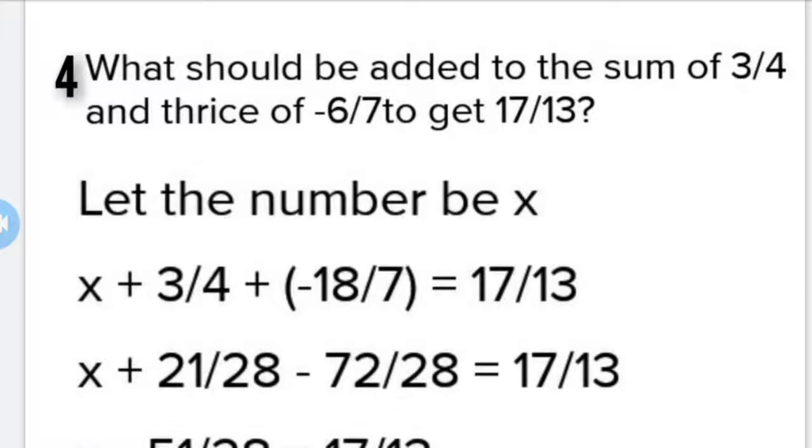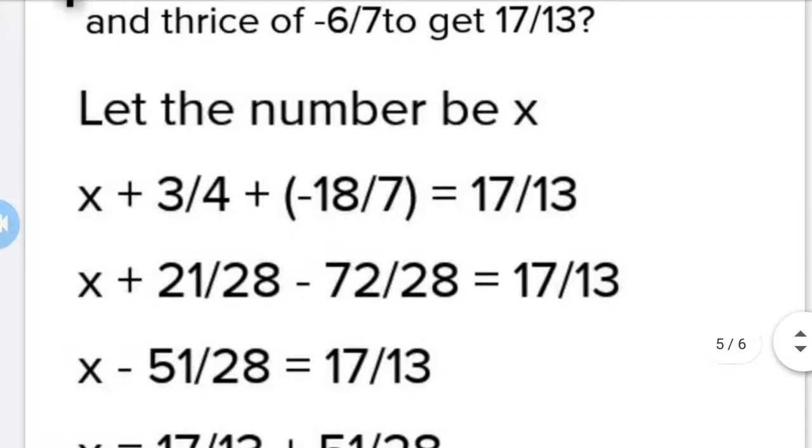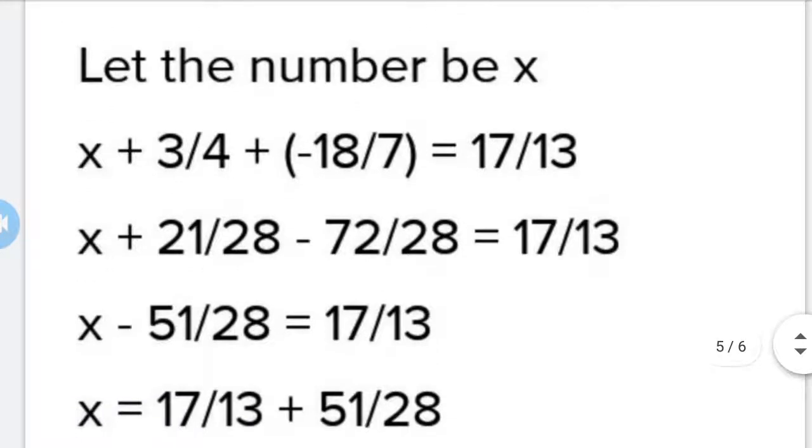Let x be the number to be added. Then x + 3/4 + 3(-6/7) = 17/13. This becomes x + 21/28 - 72/28 = 17/13, which simplifies to x - 51/28 = 17/13.